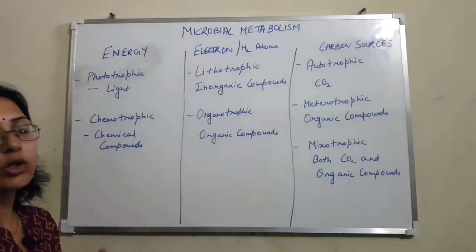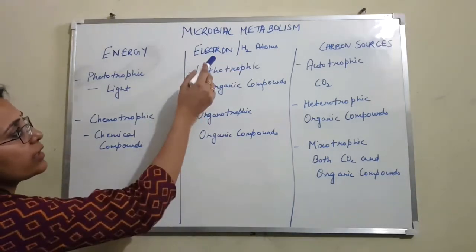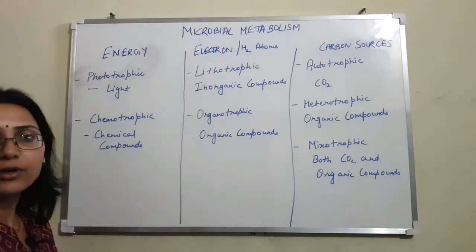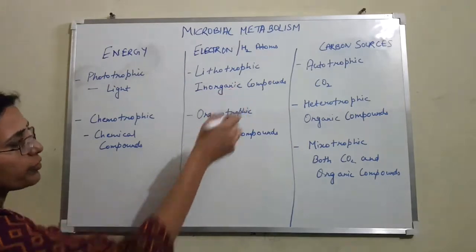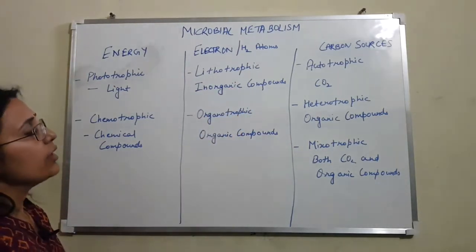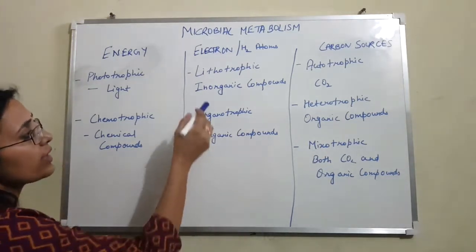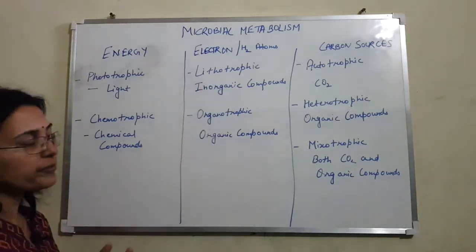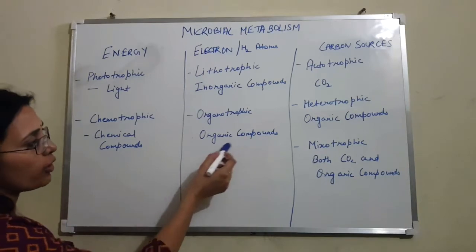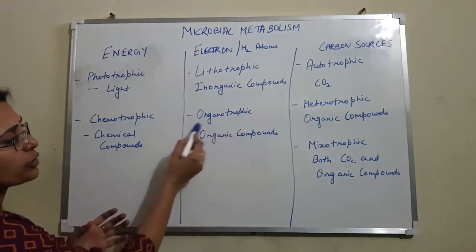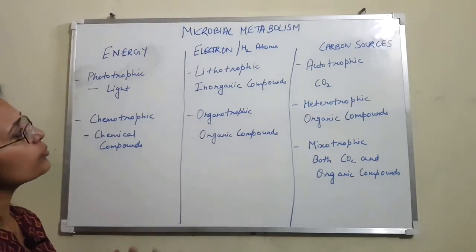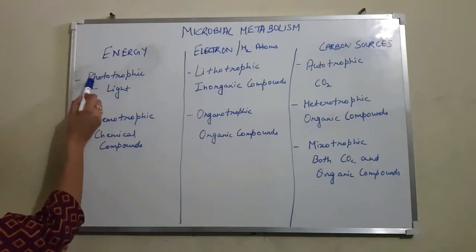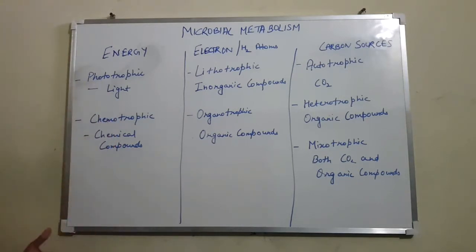The next classification is based on how microorganisms obtain reducing equivalents like electrons and hydrogen atoms. Microorganisms can be lithotrophic — obtaining electrons or hydrogen atoms from inorganic compounds — or organotrophic — obtaining them from organic compounds. The names make this easy: organotrophic means organic compounds, and photo comes from photon meaning light energy, while chemo means chemical compounds.